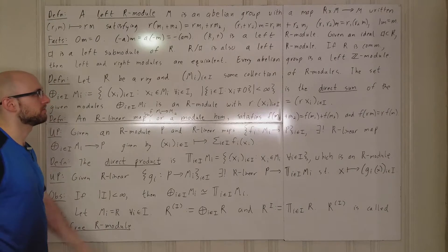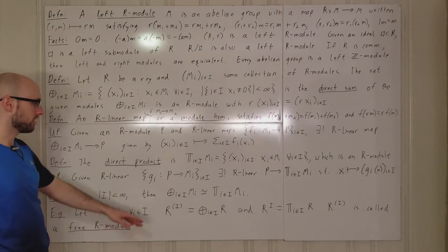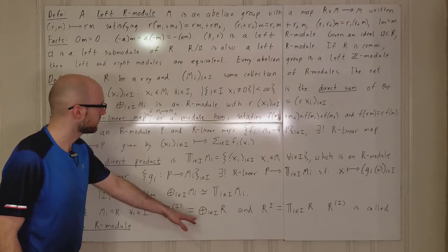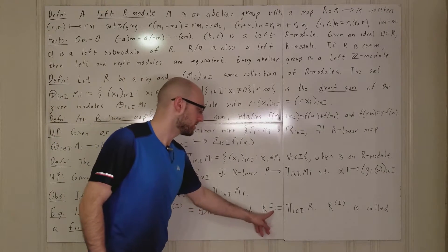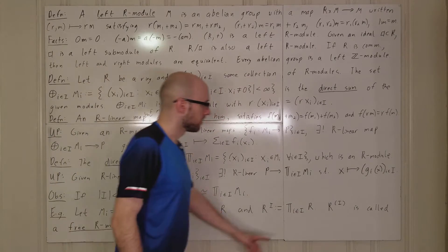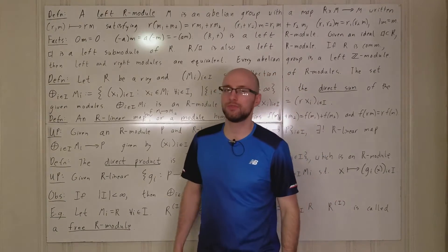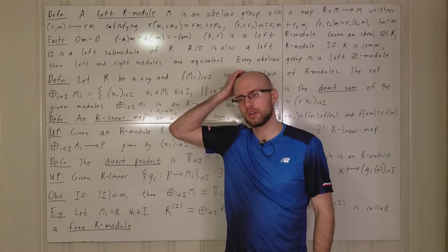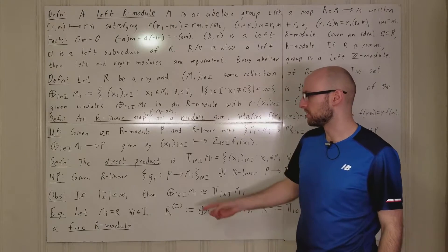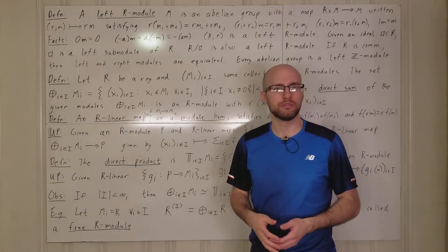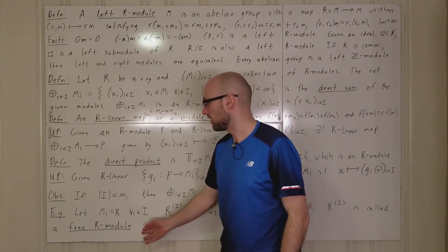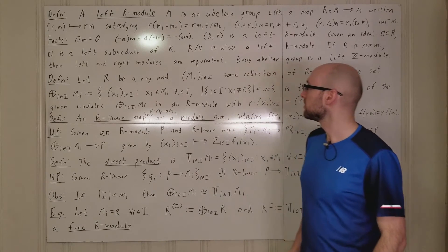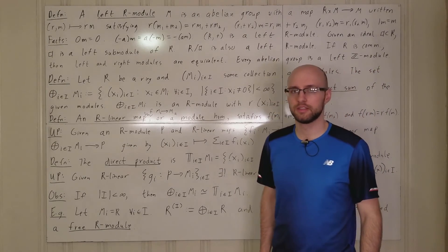Another example: if you take M_i = R for every i — since R is a left R-module — then the direct sum is written R^(I) and is called a free R-module, while R^I denotes the direct product. Free R-modules are apparently important in algebra, especially in homological algebra. This is just an introduction to the concept, and next time we'll start actually proving things.